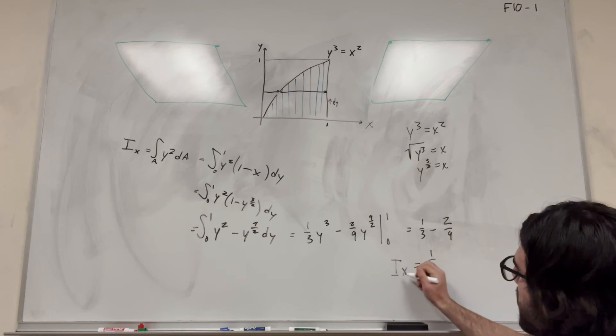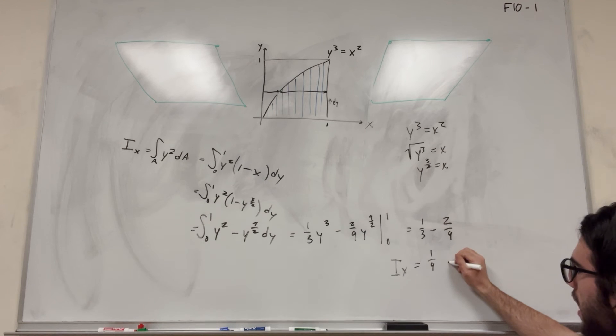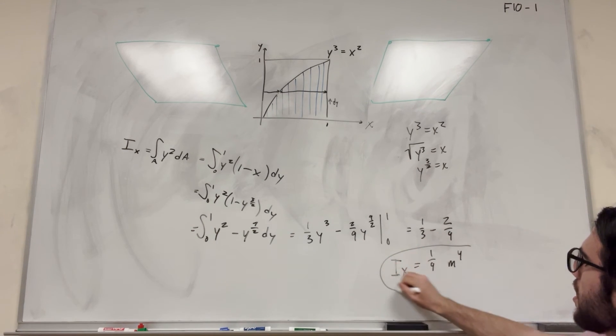So I of x, moment of inertia around the x-axis is one ninth. And then the units is meters to the fourth because that's our units.